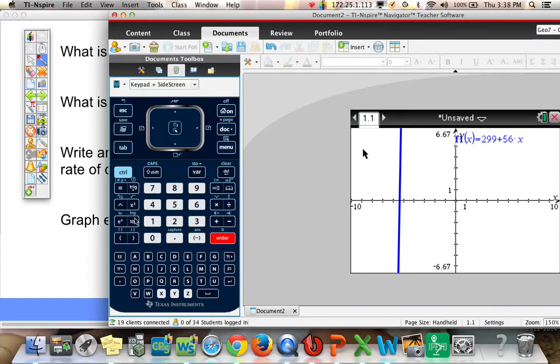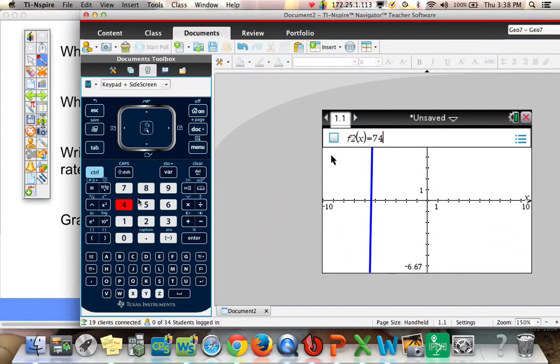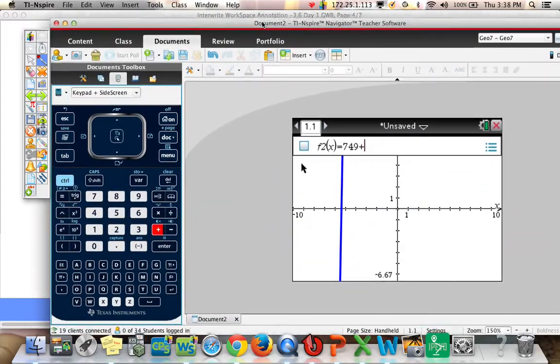Before we do that, let's enter in the next equation. So it says on our directions, hit tab. There's f2 of x, the second function. And that was $749 plus 30x.